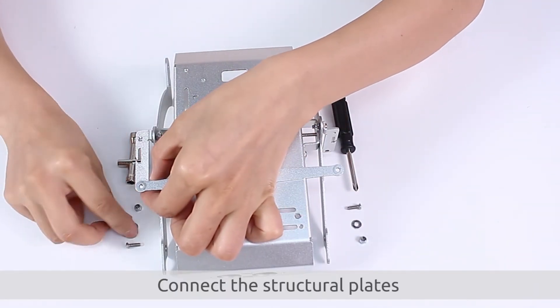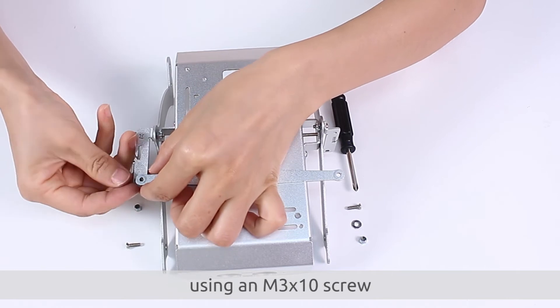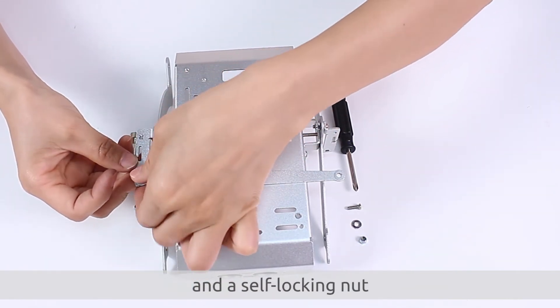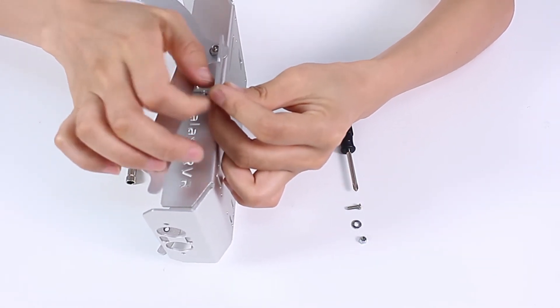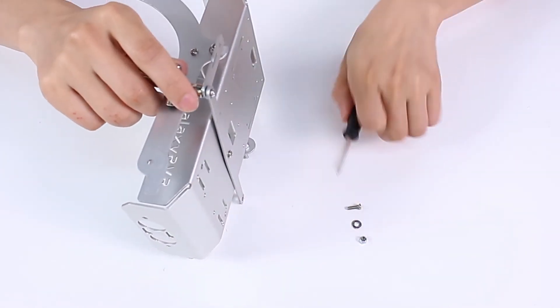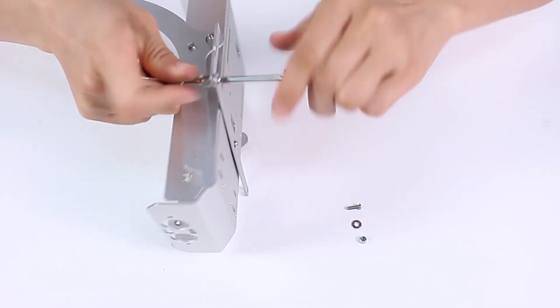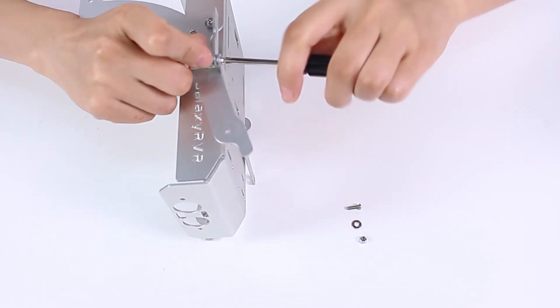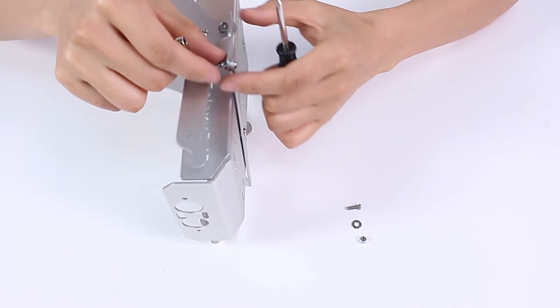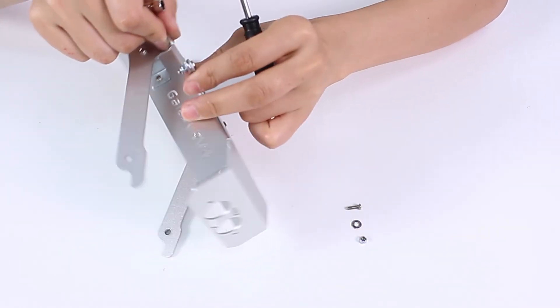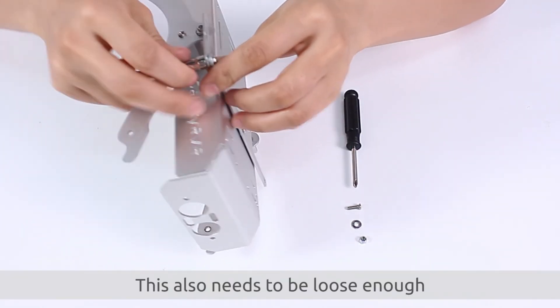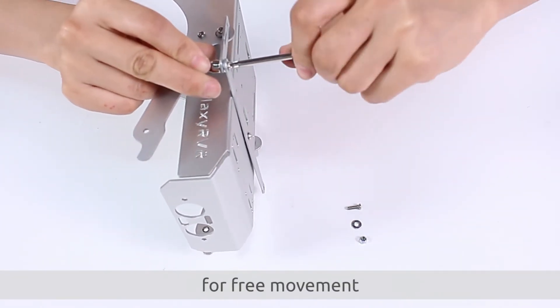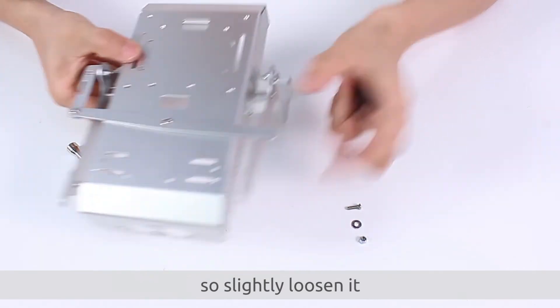Connect the structural plates using an M3 x 10 screw, a metal washer, and a self-locking nut. This also needs to be loose enough for free movement, so slightly loosen it.